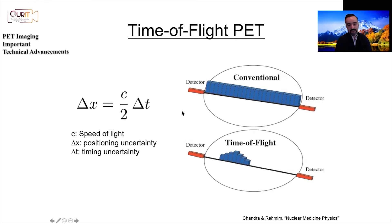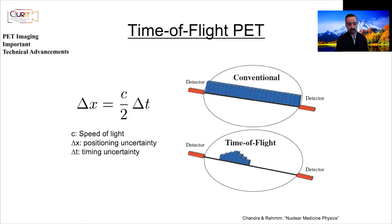As of 2021, the timing resolutions we achieve are on the order of hundreds of picoseconds, and that only allows us to narrow the position down to centimeters, not one or two millimeters. The positional uncertainty is given by Δx = c·Δt / 2, where c is the speed of light and Δt is the timing uncertainty. There is a factor of two because we are dealing with two detectors — students are encouraged to prove this themselves.